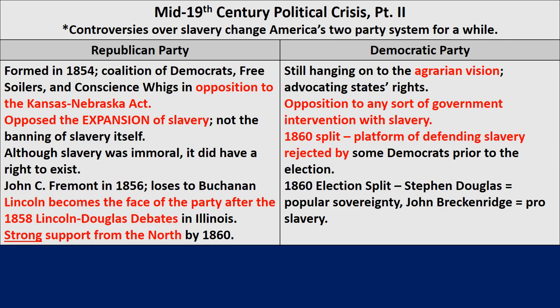Continuing with mid-19th century political crisis over slavery — the Republican Party ran in 1854, a coalition of Democrats, Free Soilers, and Conscience Whigs, all in opposition to the Kansas-Nebraska Act. They formed in response to that particular moment, with the Free Soil Party as their precursor. This party opposed the expansion of slavery but not the banning of slavery itself. The rumor was that they would eventually ban slavery, so a lot of opposition existed toward the Republican Party because of that.